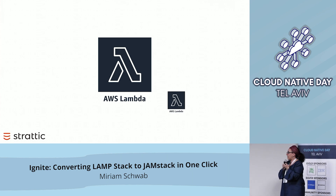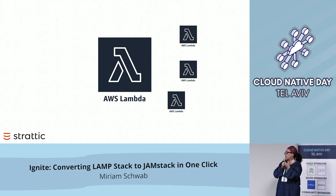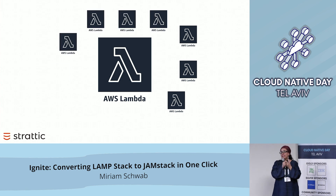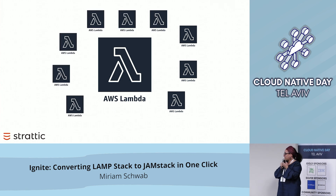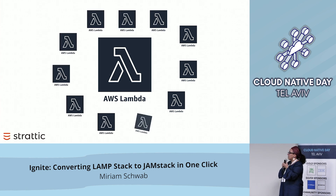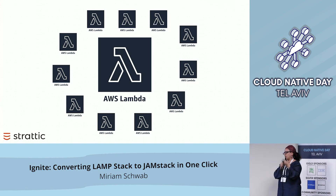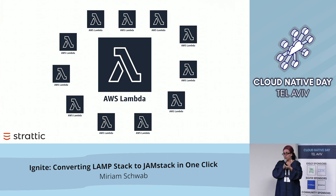So we trigger Lambda, then we trigger all sorts of mini-Lambdas. We have our own API which it targets, which it reads, and then it starts to get the content from the site.